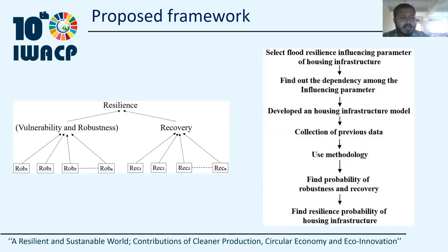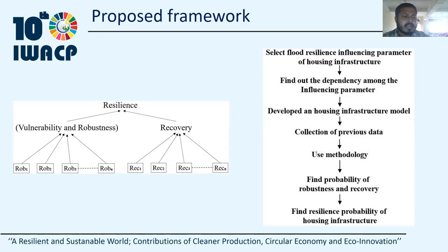This is the proposed framework. The right-hand side figure shows the different steps involved in the modeling and quantification of dynamic resilience. Initially, different experts are selected from different domains. Then based on expert knowledge and literature, different resilience-dependent parameters of housing infrastructure against flood hazard are selected. After the selection of resilience parameters, a resilience model is developed as shown in the left-hand side figure. An extensive field survey is performed for the collection of data. Then based on the collected data, the probability of each parameter is assigned, and finally by using Bayesian belief network, the flood resilience at different time periods for each surveyed area is calculated.